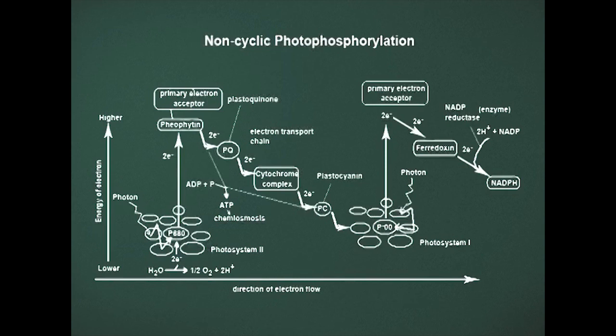The high energy electron accepted by pheophytin is passed to plastoquinone, which is a mobile quinone along the thylakoid membrane. The plastoquinone then passes the electron to the cytochrome B6F complex and then to plastocyanin. The cytochrome B6F complex is a large multi-subunit protein with several prosthetic groups, and plastocyanin is a copper-containing protein.